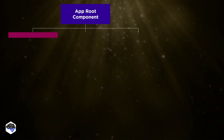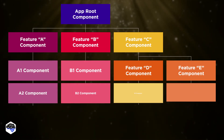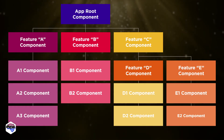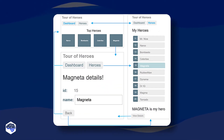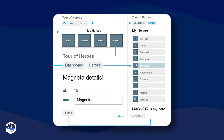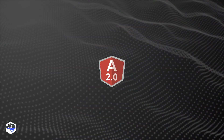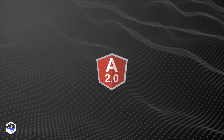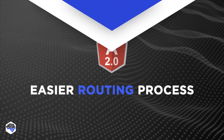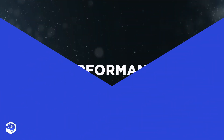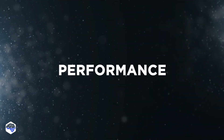Routing is used to manage users' actions in the app and define which portion of the page a user will see after any action. By creating a routing app, developers use Angular Router to control the navigation on the page and interpret the user's actions. In Angular, the process itself became much easier.